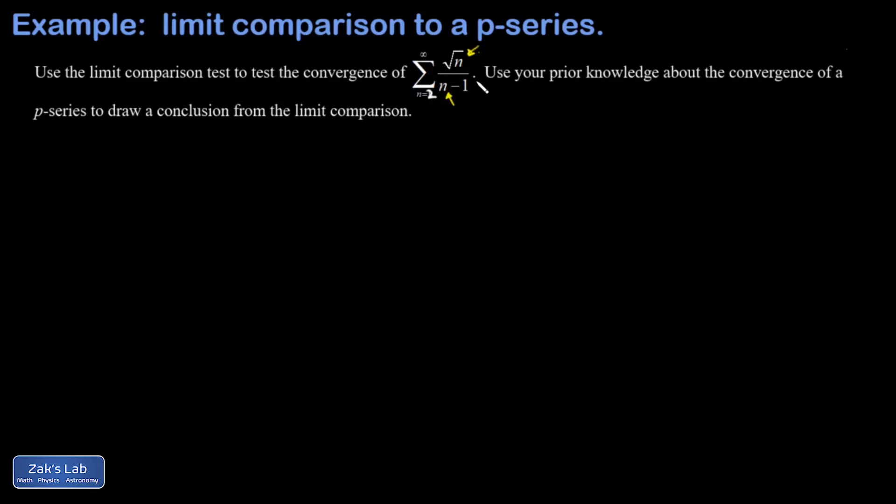So we make a decision on what to limit compare to, and we're going to compare to the series one over root n.